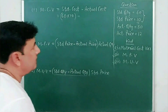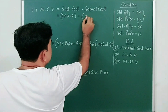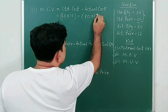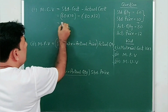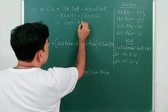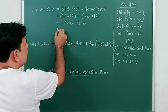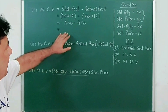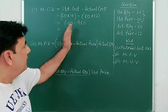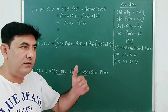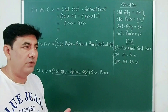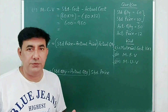Actual cost is actual quantity into actual price. Standard cost is 600 and actual cost is 960. Now comparing standard cost and actual cost, the actual cost is greater than standard cost, so this is an adverse situation — that means an unfavorable situation.